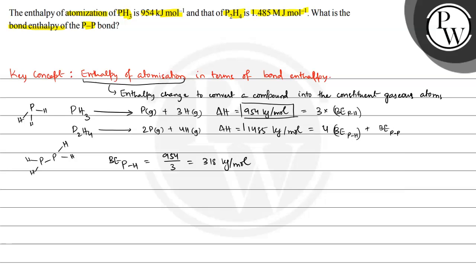We will put it in this equation. Bond energy of P-P plus 4 multiplied by bond energy of P-H that is this value. 4 multiplied by 318 equals 1485 kilo joule per mole, or bond energy of P single bond P is found to be 213 kilo joule per mole.